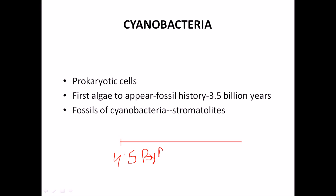So 4.5 billion years ago Earth formed, and then 3.5 billion years ago this kind of cyanobacteria spread life on planet Earth. We can say cyanobacteria are a type of pioneer species that started to grow and colonize this planet very early.